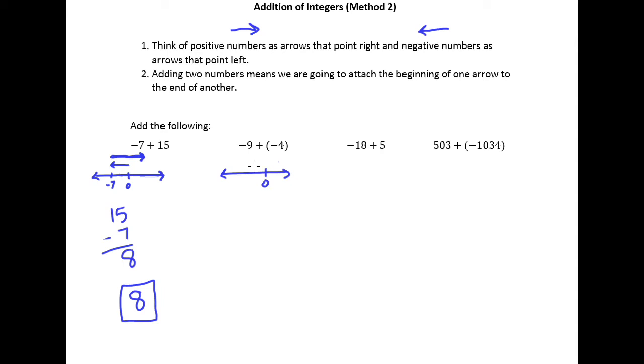So I'm starting with negative nine. I'm going to think of that as an arrow that points to the left and goes nine units. Now negative four is also a left pointing arrow, so I'm going to attach the beginning of negative four to the end of negative nine and it points left.